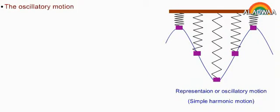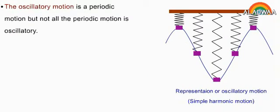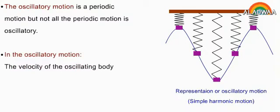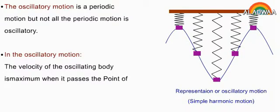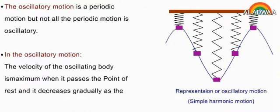Oscillatory motion is a periodic motion, but not all periodic motion is oscillatory. In oscillatory motion, the velocity of the oscillating body is maximum when it passes the point of rest and decreases gradually as the body moves away.